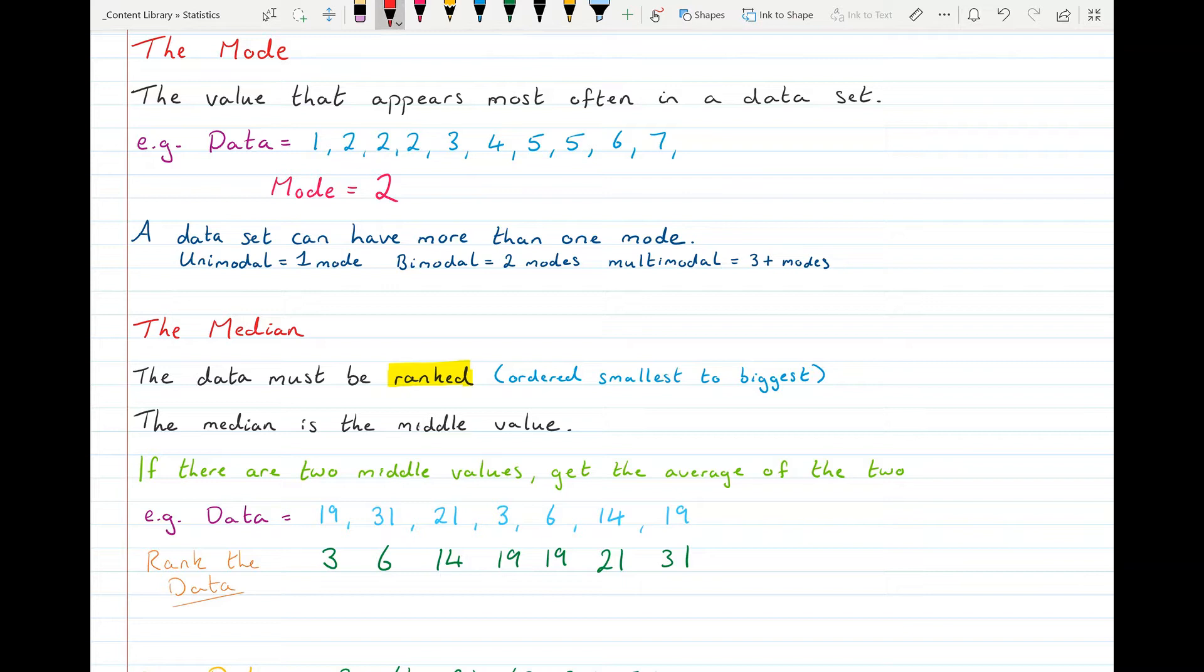And to find the middle value, I'm going to cross off the first value and the last value. And I'm going to work my way into the middle. So I cross off the second and the second last, the third and the third last. And that value there in the middle, we call the median. So the middle value of that data set is 19. The median is 19.